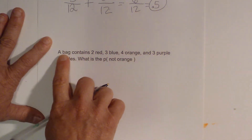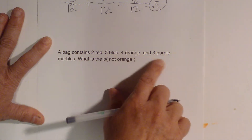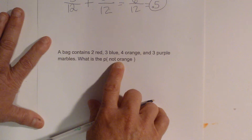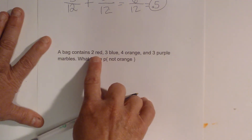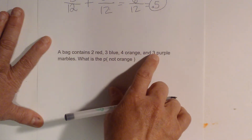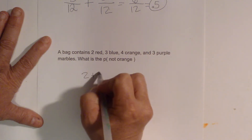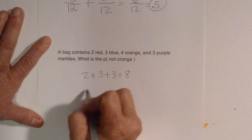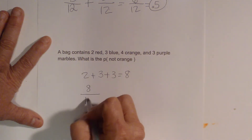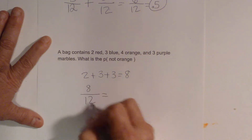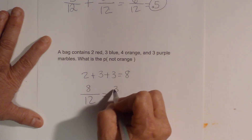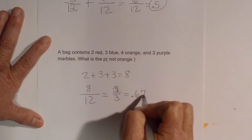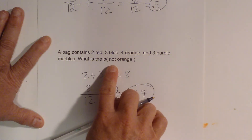Let's look at the same bag — two red, three blue, four orange, and three purple. What's the probability of not orange? If it's not orange, that means it's red, or blue, or purple. So we add red, blue, and purple — that adds to eight. So eight out of 12, which is two thirds. The probability is 0.67. And that's the probability of not orange.